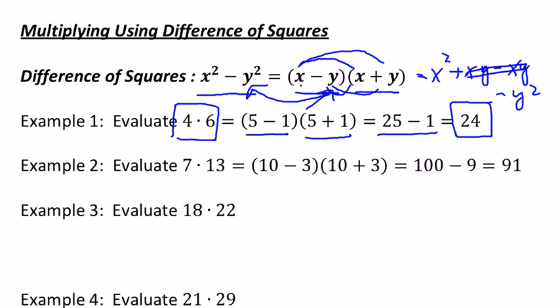7 times 13 is the same way. 7 times 13 is equidistant away from 10. It's 10 minus 3, 10 plus 3.